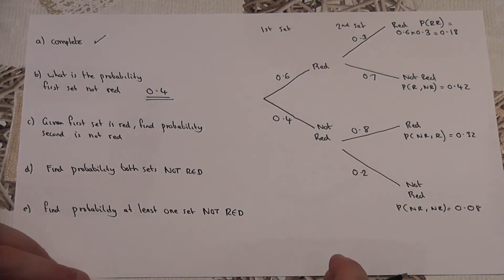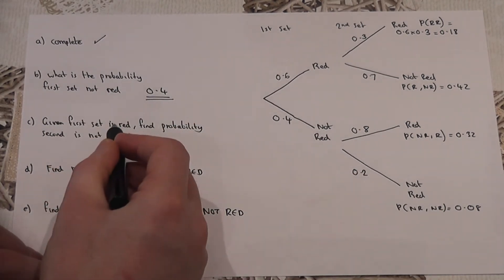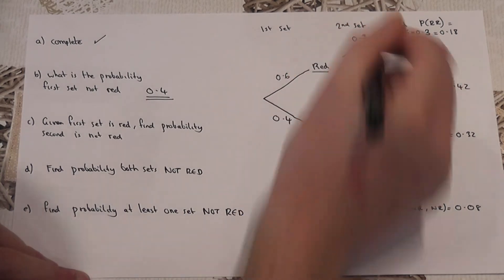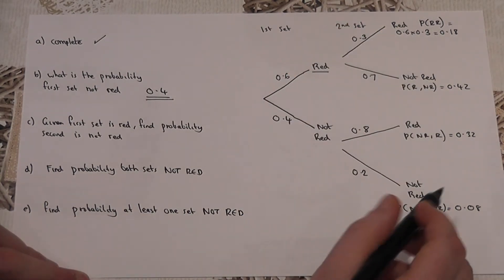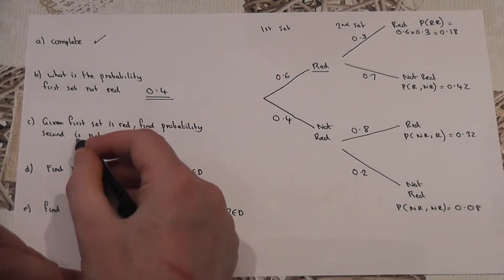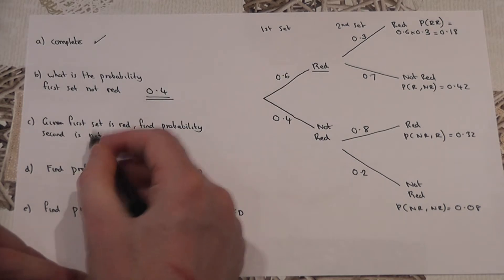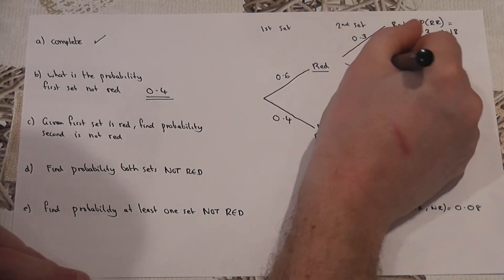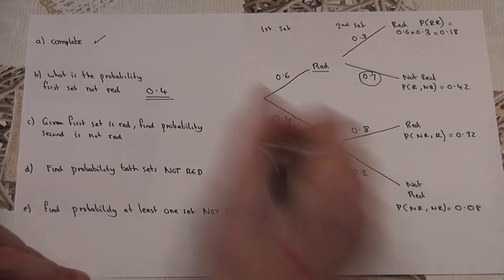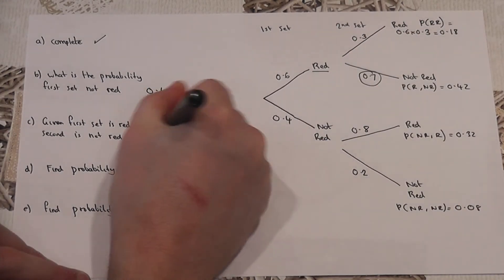Part C, a bit of language to read carefully, given the first set is red. So given the first set is red, what is the probability that the second is not red? Well, first set red, second not red, it's just that number there. It's just 0.7.